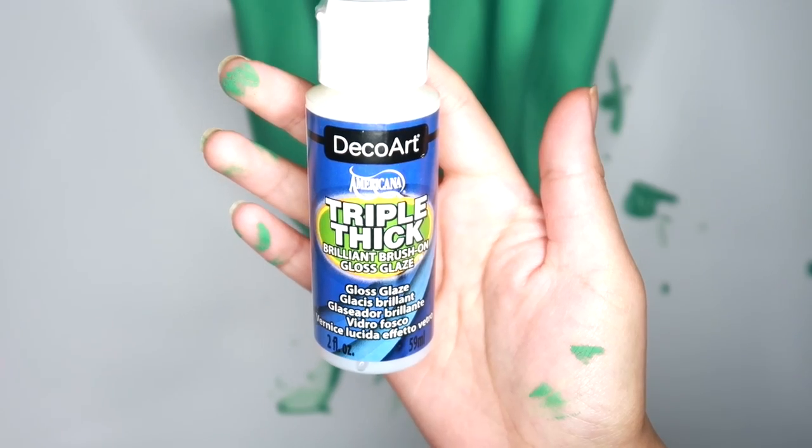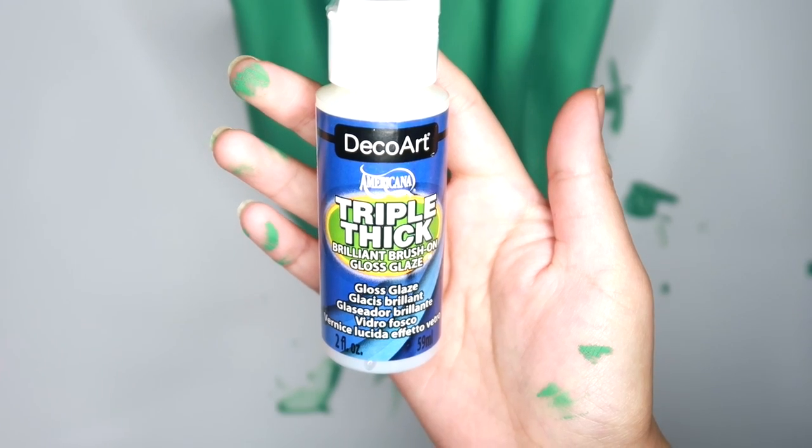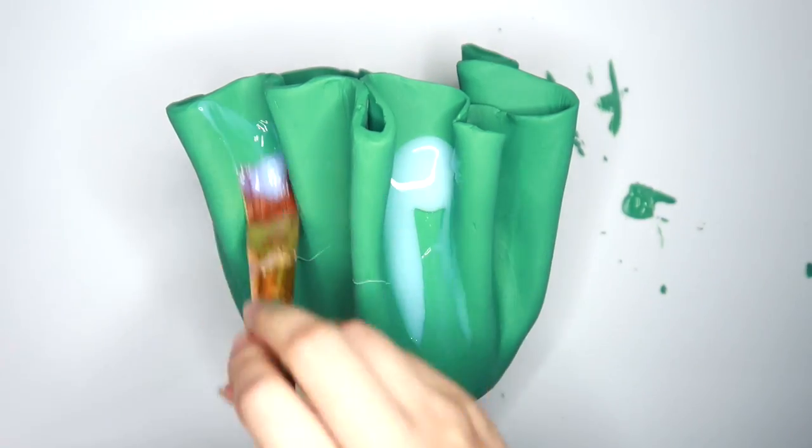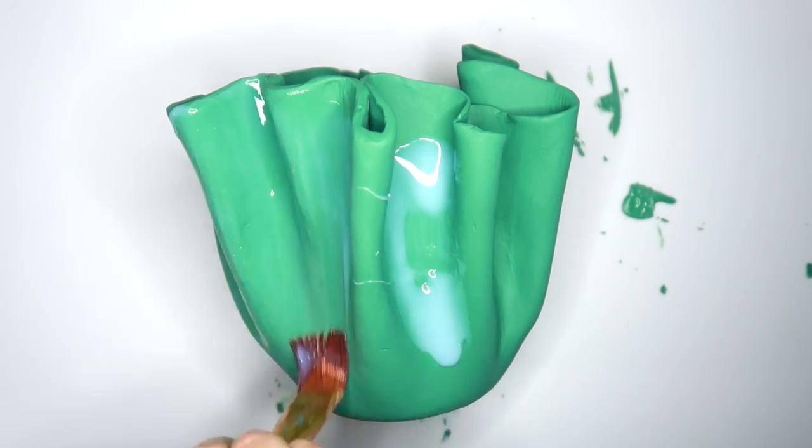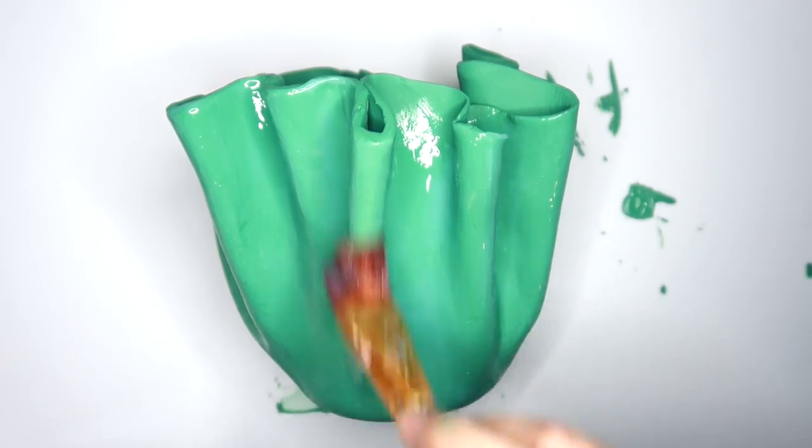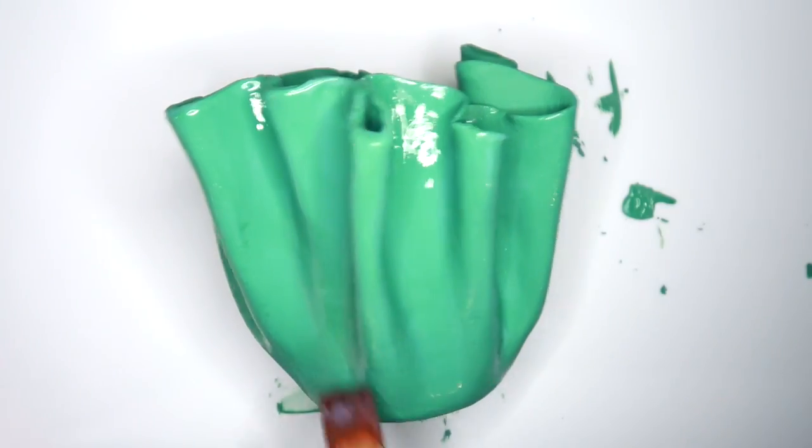The last thing we got to do is seal this and I'm going to be using DecoArt's Triple Thick Gloss Glaze. And I'm going to be using this vase for dried flowers, but you could totally use actual flowers if you just put like a little cup in there with some water. Just make sure not to get the actual clay wet since this is air dry clay.